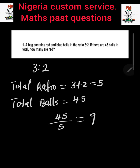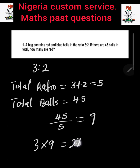The next thing we are going to do is to find the ratio of the red balls. As you can see from the equation, we need to find how many are red. So we are going to multiply 9 by the ratio of red. Remember, 3 belongs to red while 2 belongs to blue. So we multiply 9 by 3.